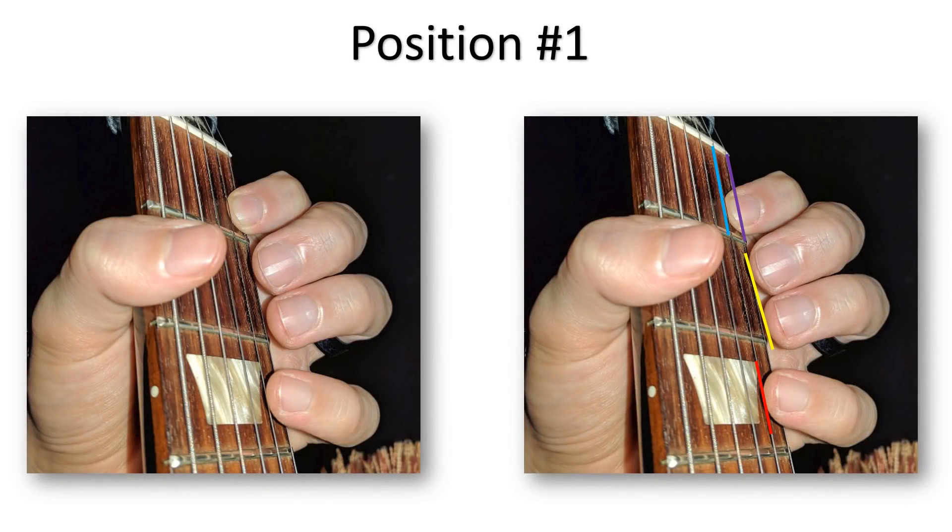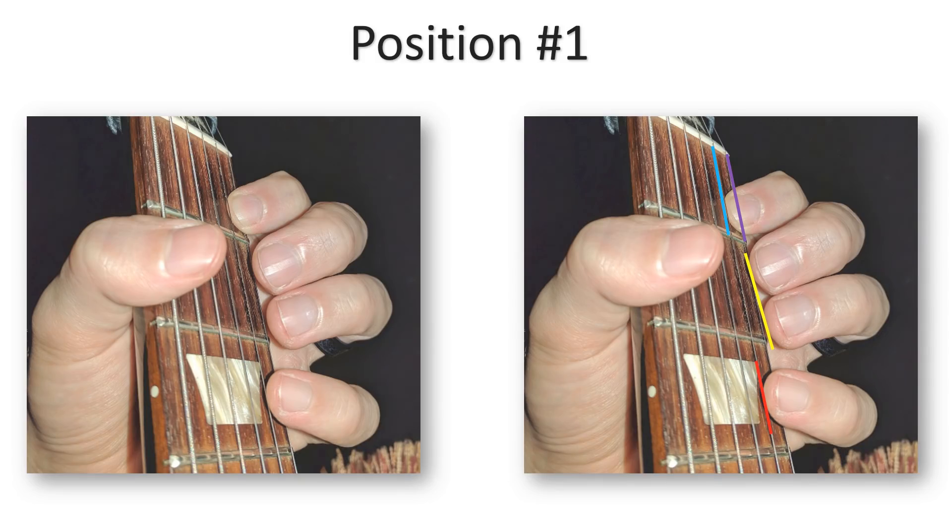I fret the high E string with my pointer finger while the tip mutes the B string above it. I also try to make a generally straight line between fingers 2 and 3. For my pinky, I leave it hovering over the B string as to not upset the high E string.